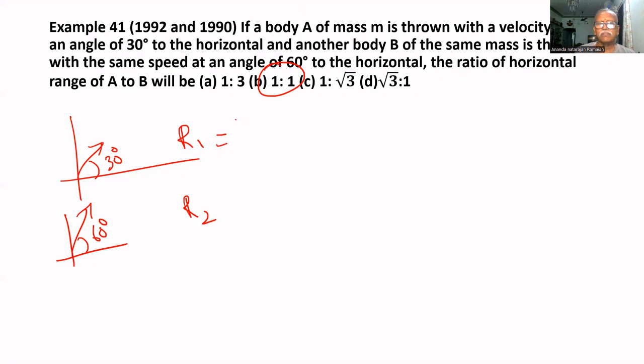R1 equals U² sin(2×30°) divided by G. R2 equals U² sin(2×60°) divided by G.